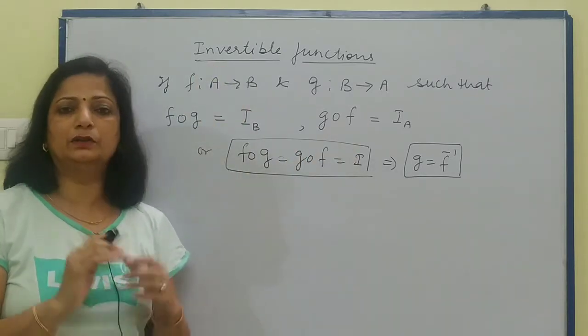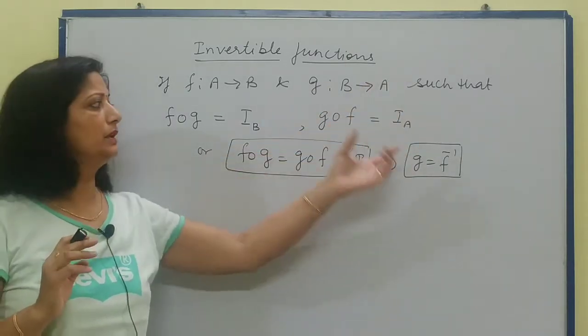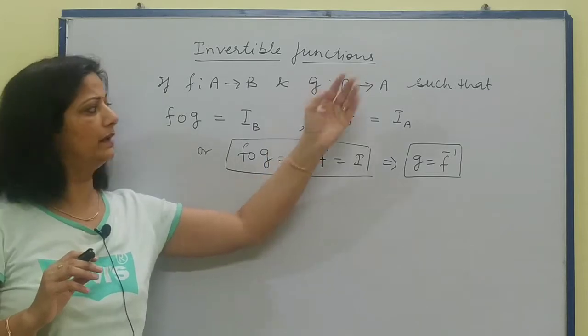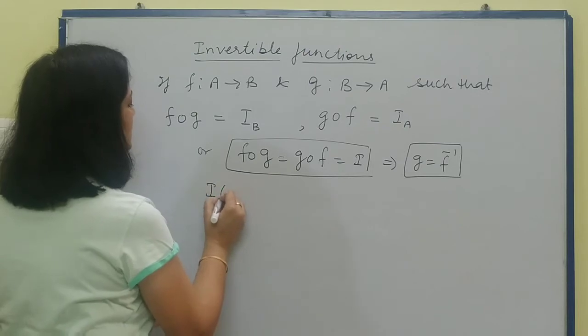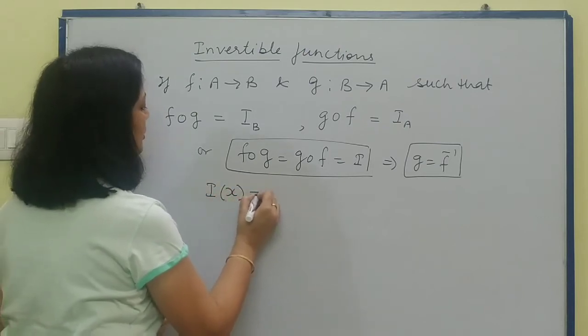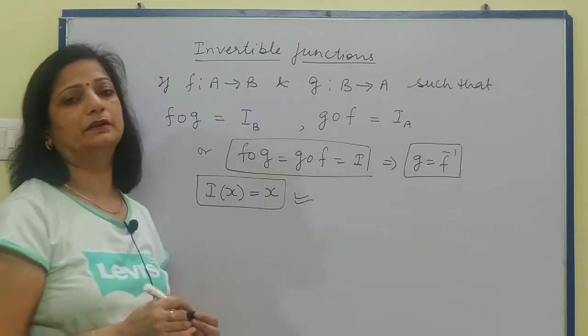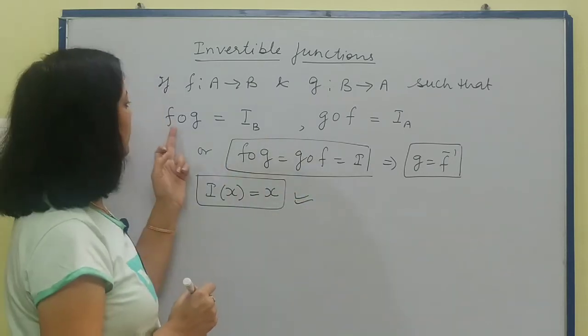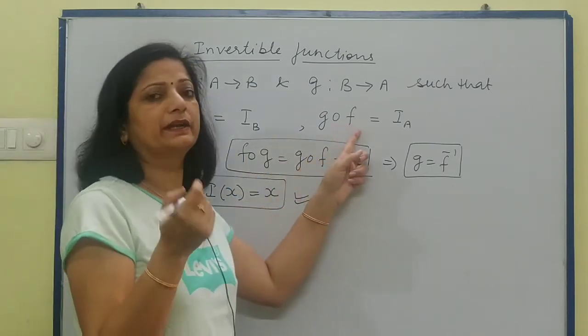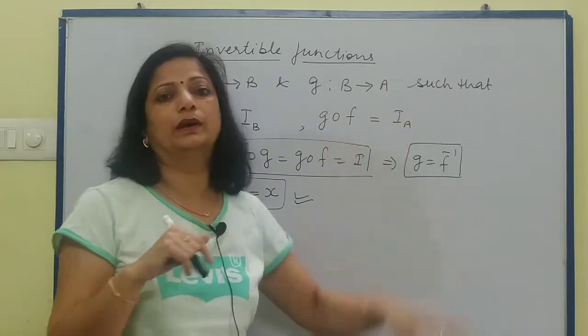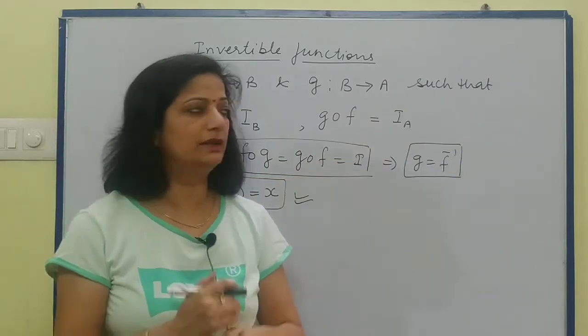Whenever we need to find inverse, we can very easily find it with the help of composition. In this, you don't need to calculate one-one or find onto, you don't have to prove anything. Just find a function g and show that both compositions give identity. Now what is identity? Identity means at whatever point you operate, you should get that point as the function value. This is called identity function. So f composite g operating on y should equal y, and operating on x should equal x. This will show that g is f inverse.